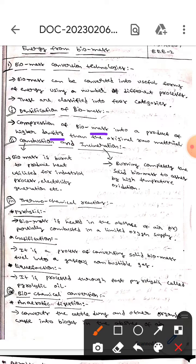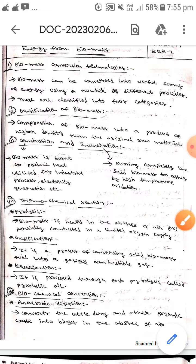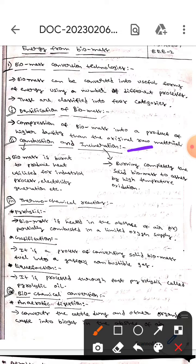The second one is combustion and incineration. First is combustion, which means biomass is burnt to produce heat utilized for industrial processes, electricity generation, etc.